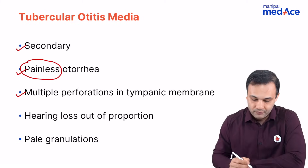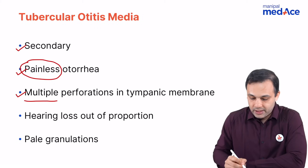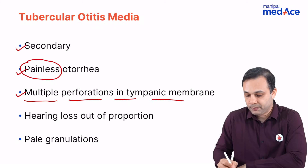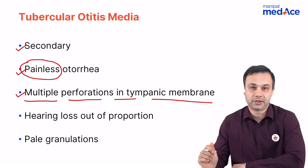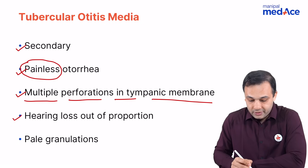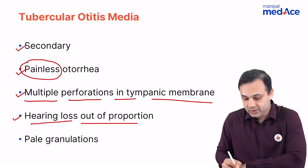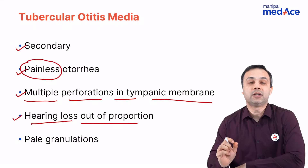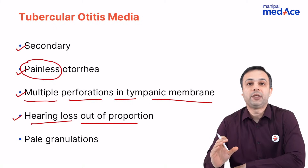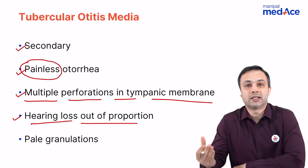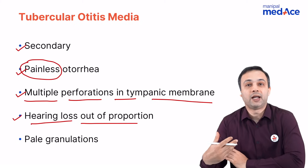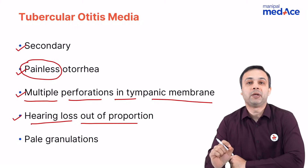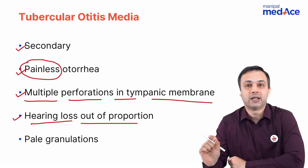There is no pain at all, and eventually when these multiple perforations coalesce, it becomes a single large perforation. The hearing loss is out of proportion. The perforations are more often in the pars tensa, and the hearing loss is disproportionate to that of the perforation — it might be a large air-bone gap or it may present with a sensorineural hearing loss.